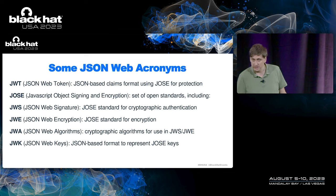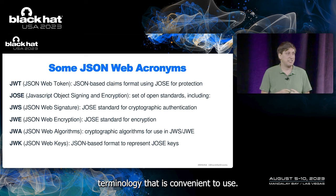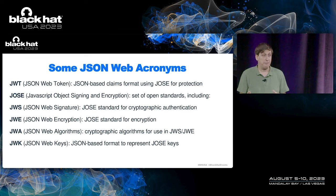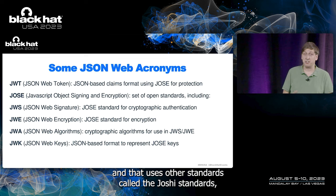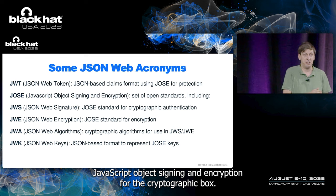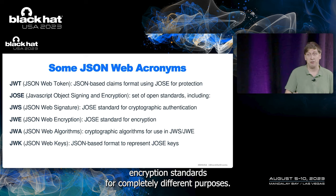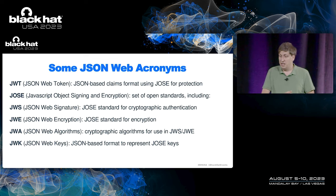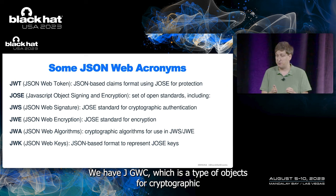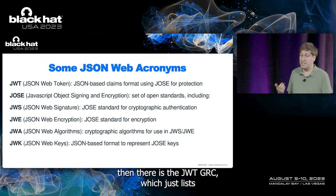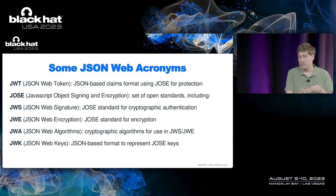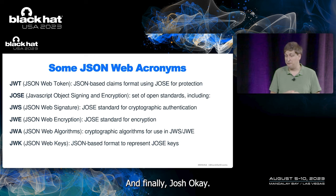Before continuing, here's some terminology. JSON Web Tokens (JWTs) define a JSON-based claims format using the JOSE standards — JavaScript Object Signing and Encryption — for the cryptographic parts. Within those standards, JWS is used for cryptographic authentication, and JWE is used for encryption when confidentiality is also required. There is also the JWA RFC, which lists and defines the cryptographic algorithms used by both standards. Finally, JWK is a format for storing cryptographic keys to use with these standards.